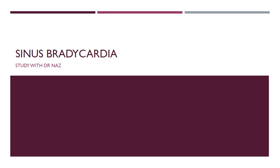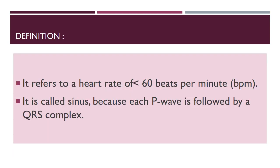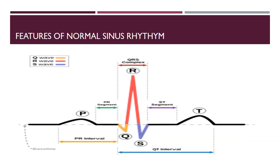Hello everyone and welcome to my YouTube channel. The topic of today's discussion is sinus bradycardia. It refers to a heart rate of less than 60 beats per minute, and it is called sinus because each P wave is followed by a QRS complex. This is a normal sinus rhythm — P wave followed by QRS complex and T wave.